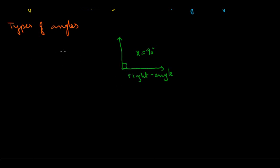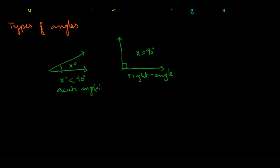If your angle is less than 90 degrees — where you have one line and another line and you can clearly see the angle is less than 90 — this is known as an acute angle. The third type is when the angle is greater than 90 but less than 180. This angle is called an obtuse angle.